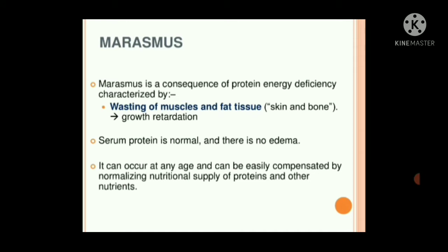Marasmus is a consequence of protein energy deficiency characterized by wasting of muscles and fat tissue. The skin and bone are fully affected. There is muscle wasting and growth is totally retarded. Serum protein is normal and there is no edema. It can occur at any age and can be compensated by normalizing the nutritional supply of protein and other nutrients, whether for a pediatric or adult individual.